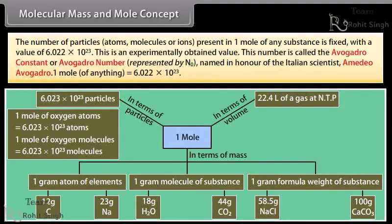The number of particles (atoms, molecules, or ions) present in one mole of any substance is fixed with a value of 6.022 × 10^23. This is an experimentally obtained value. This number is called Avogadro constant or Avogadro number, represented by N0, named in honor of the Italian scientist Amedeo Avogadro. 1 mole of anything is equal to 6.022 × 10^23.